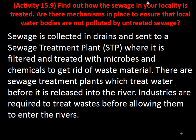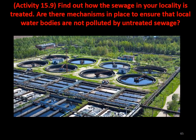Find out how sewage in your locality is treated. The sewage is collected in drains and sent to the sewage treatment plant where it is filtered and treated with microbes and chemicals to get rid of waste materials. There are sewage treatment plants which treat water before it is released into the river, and industries are required to treat their waste before allowing it to enter rivers.